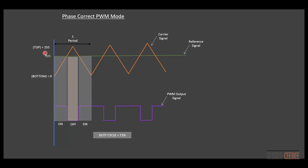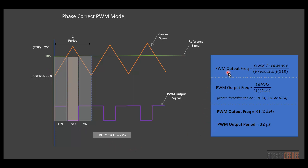To find the output frequency and period of this PWM signal, we use these equations. The clock frequency of the crystal oscillator is 16 MHz, divided by prescaler times 510 — that's 255 times 2. There are certain prescaler values available: 1, 8, 64, and so on. Using a prescaler of 1, we get approximately 31.25 kHz frequency and a 32-microsecond period.